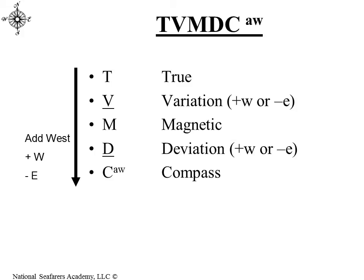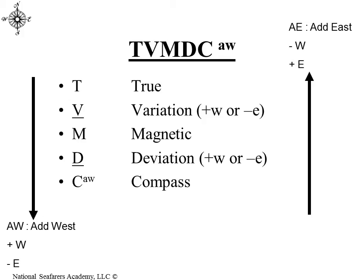Now we have to be able to work through the different reference systems. As you can see, the TVMDC mnemonic — true, variation, magnetic, deviation, compass — with arrows pointing down. When we go in that direction, from true to compass, we're going to add any westerly deviation or variation. If it was east, we'd be subtracting it. Now if we go up from the bottom — from compass up to true — we do exactly the opposite: we add east and subtract west. There's also a memory aid for going from compass to true: 'can dead men vote twice at elections.'